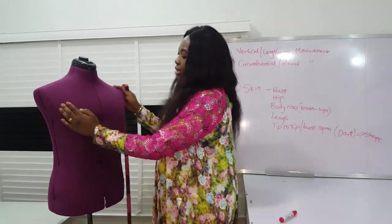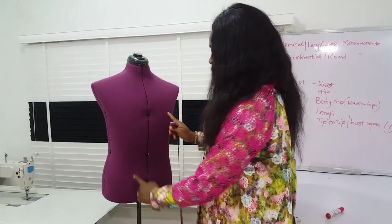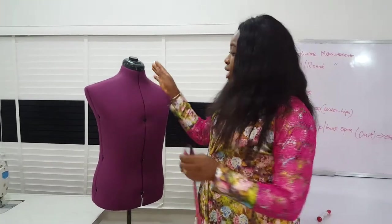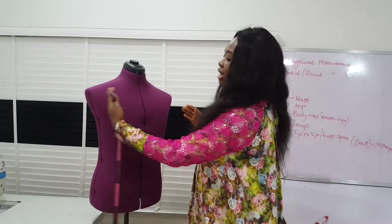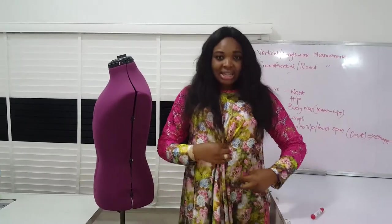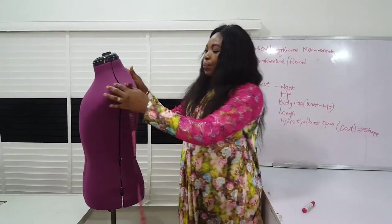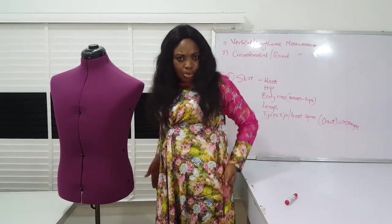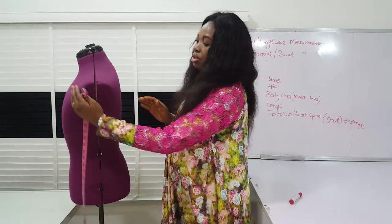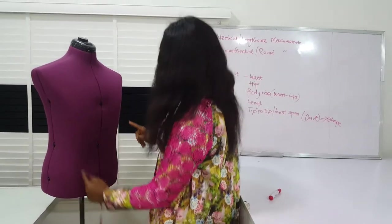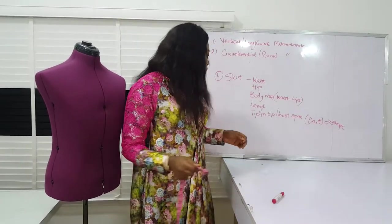We need the tip-to-tip because we want two darts — one dart facing one nipple point and the other dart facing the other. Our bodies are symmetrical, so we can imaginarily divide the body into left and right halves, or into front and back halves. That's why you have these lines here. When you take the dart measurement tip-to-tip, one dart faces one side while the other faces the other side, giving balance on your skirt or garment.